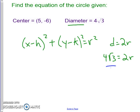Divide both sides by 2. So then we get the radius to be 2 root 3.